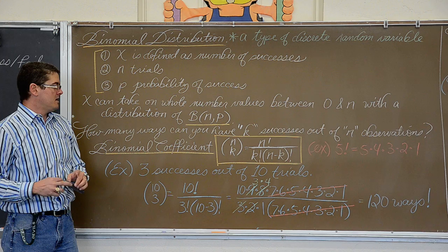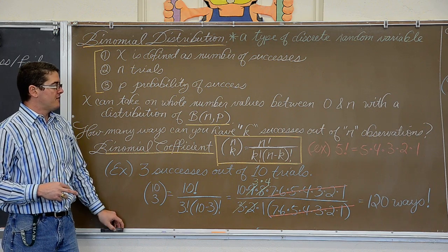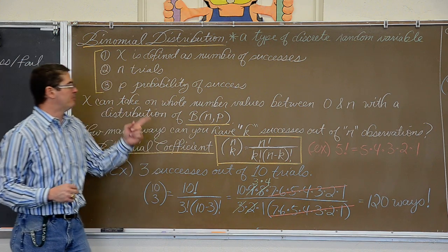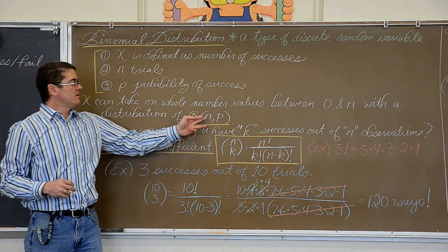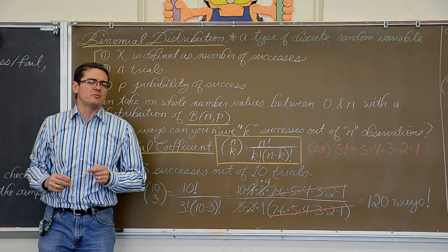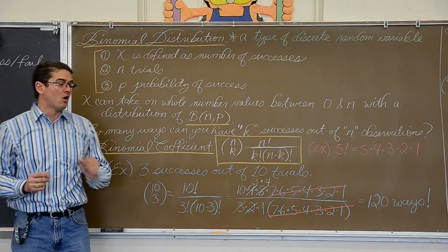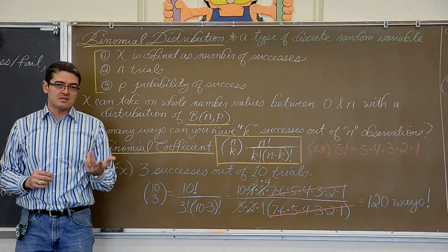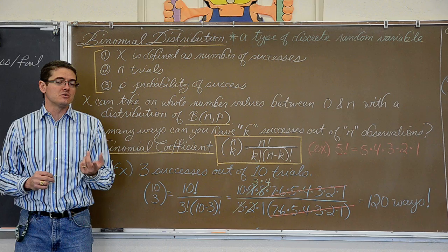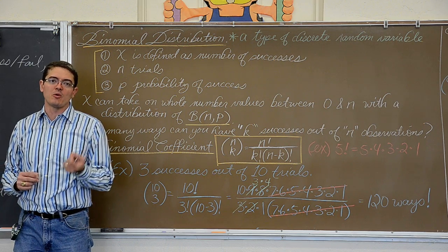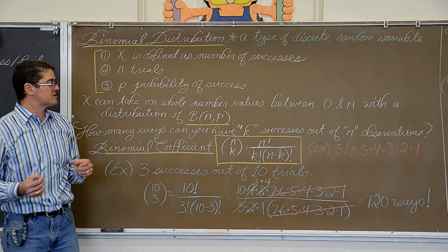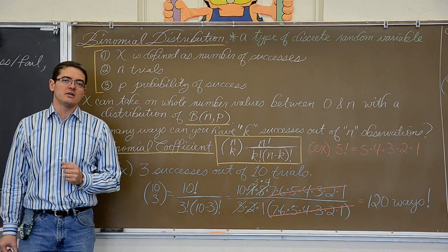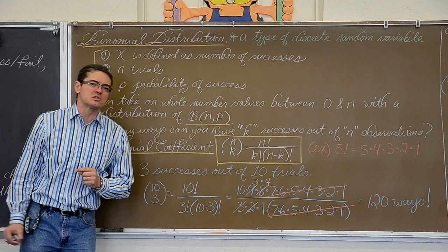How many ways can you have k successes in n observations? By the way, this binomial distribution is not always going to be normal. We will be discussing what is called normal approximation and how we check if our binomial distribution is normal.